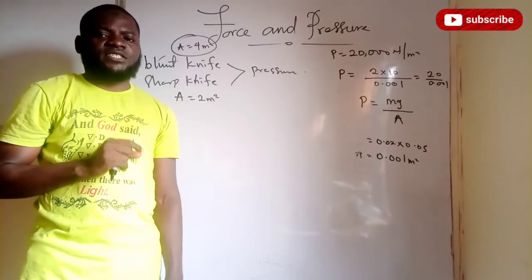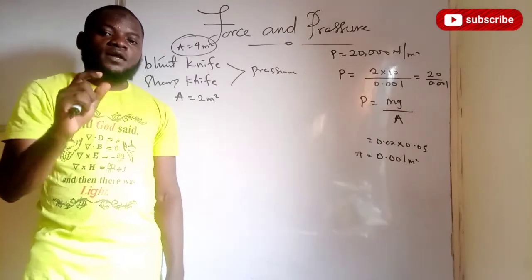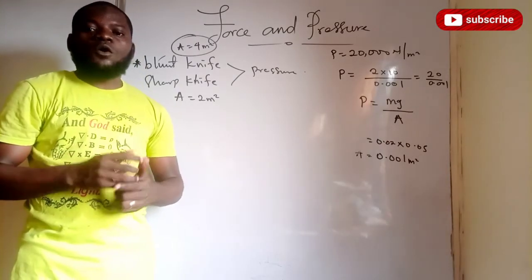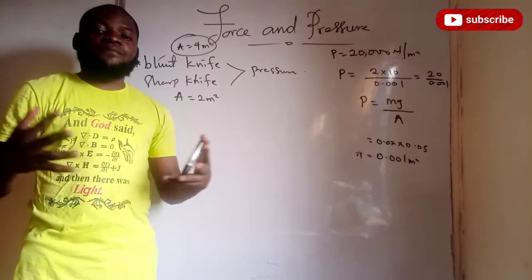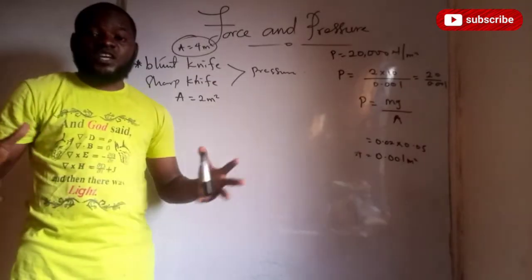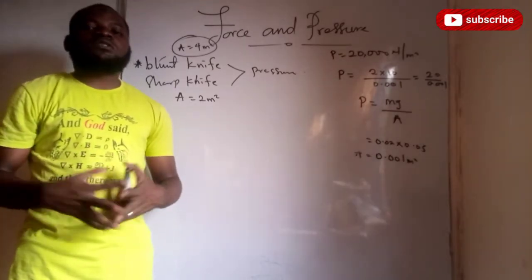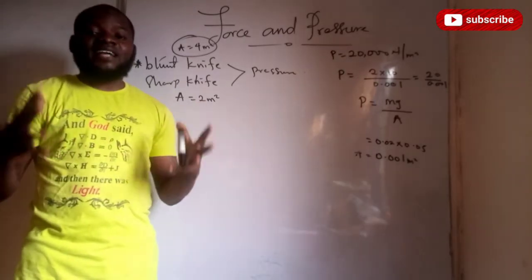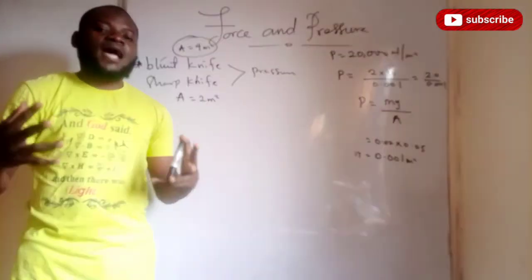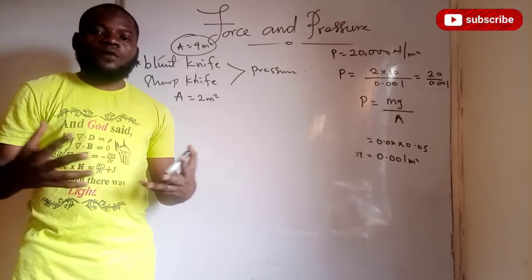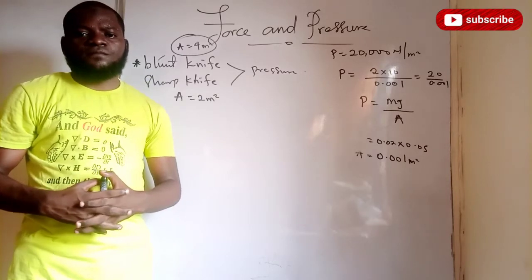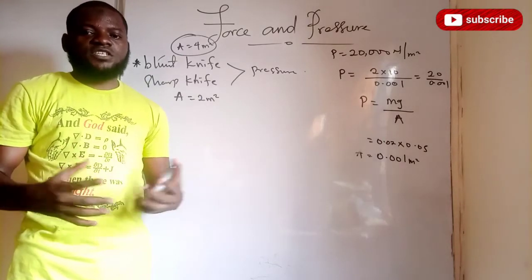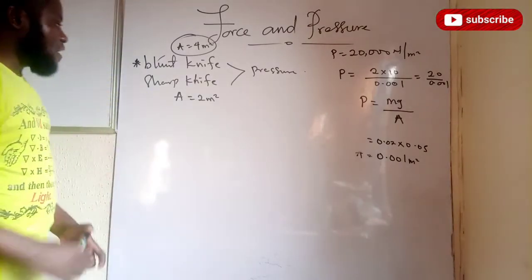Now when you see materials like tractors and trailers, they are made with big tires. Why? Because it requires a large area. When you have a large area, you have a small amount of pressure, and that prevents them from sinking or getting stuck in the ground.